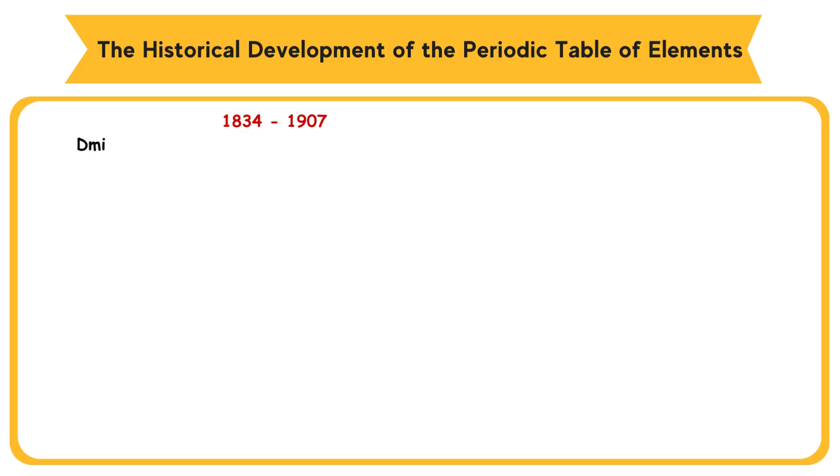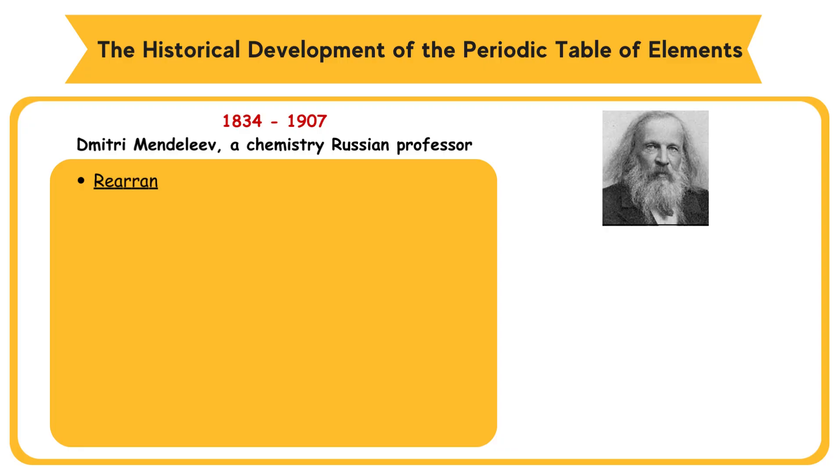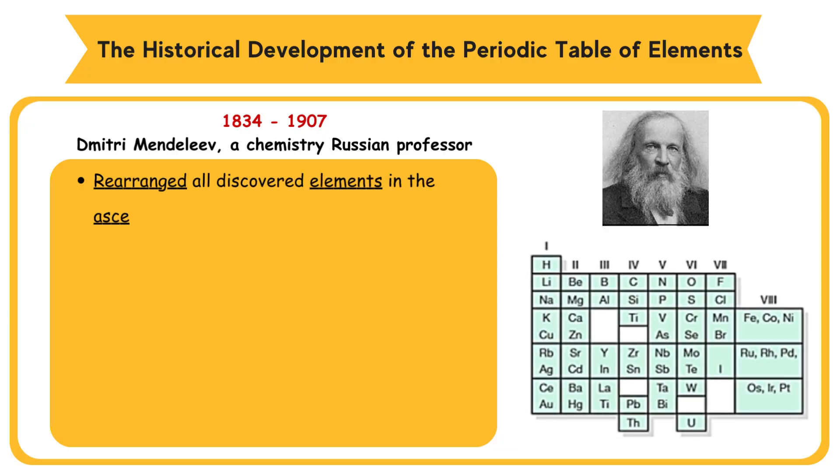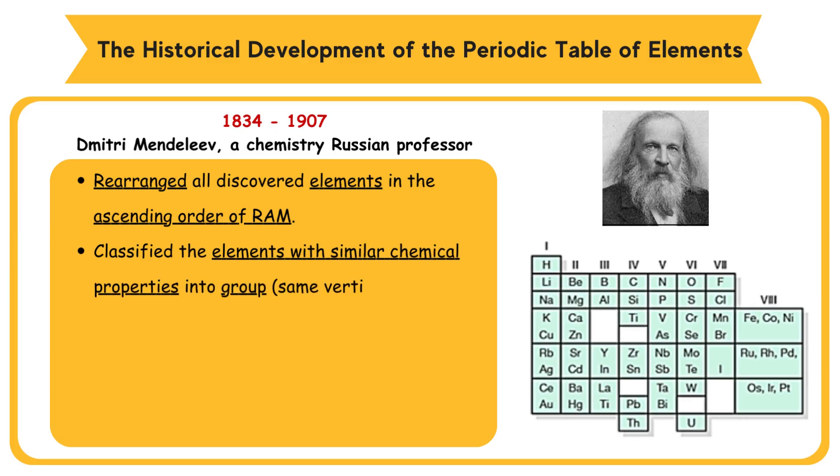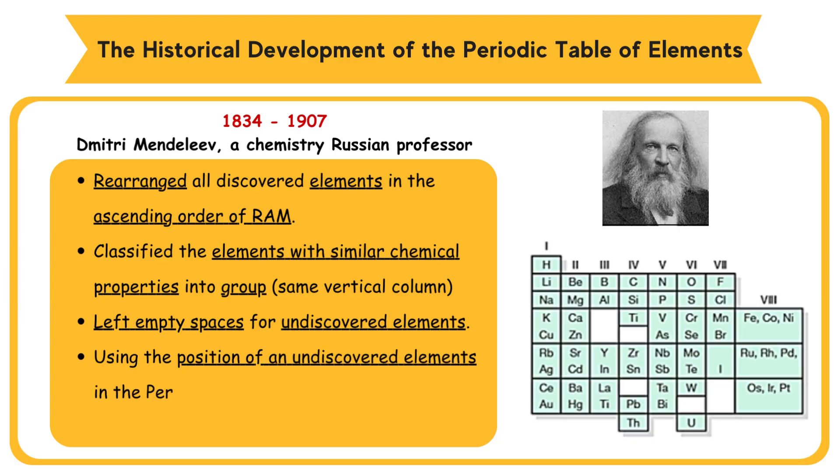1834-1997, Dmitry Mendeleev, a chemistry Russian professor, rearranged all discovered elements in the ascending order of relative atomic mass. Classified the elements with similar chemical properties into the same vertical column named group. Left empty spaces for undiscovered elements. Using the position of an undiscovered element in the periodic table to predict its properties.